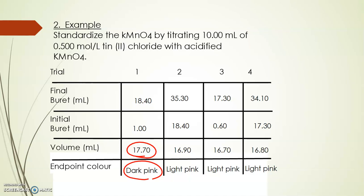Let's remember before we start what's what. In the burette was the KMnO4, so the volume recorded here is the KMnO4 volume. If we read the title, we can get the other information. It says we got 10 milliliters of tin(II) chloride, and its concentration is 0.500 moles per liter. We'll pay attention to that when we start stoichiometry.